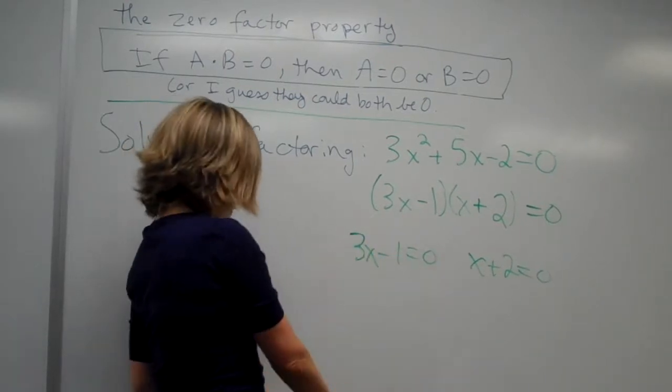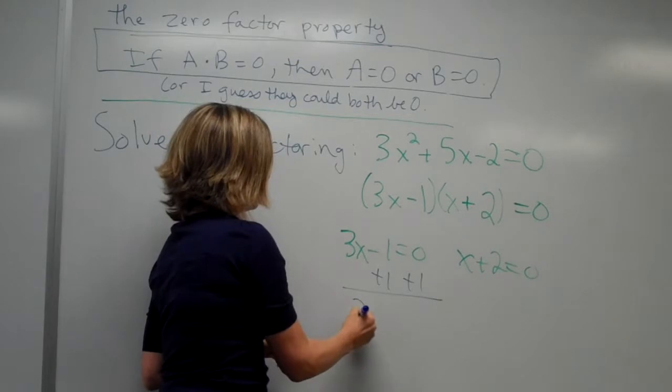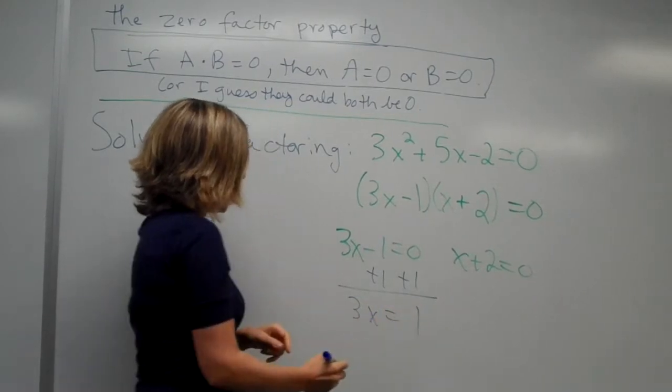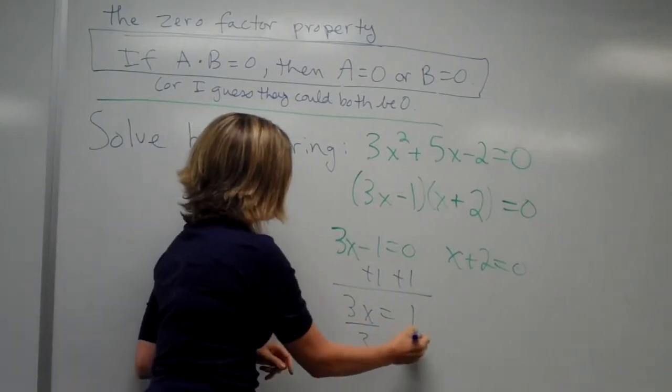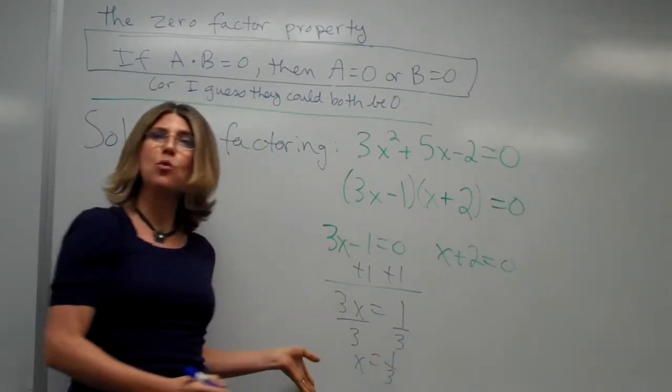So in order to solve this, we need to first add 1 to both sides. So we get 3x is equal to 1, and then we divide both sides by 3, giving us x is equal to 1 third. That is one of our solutions.